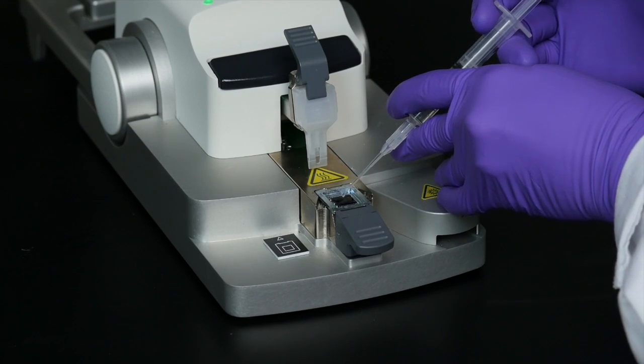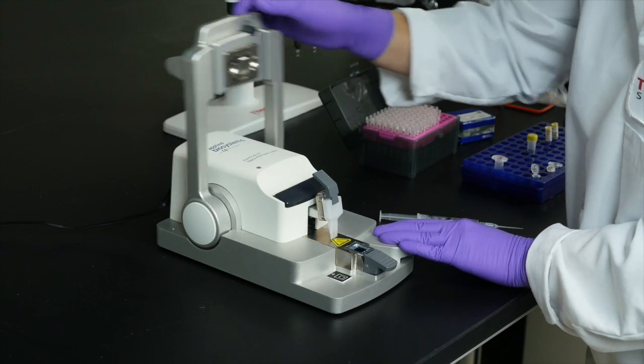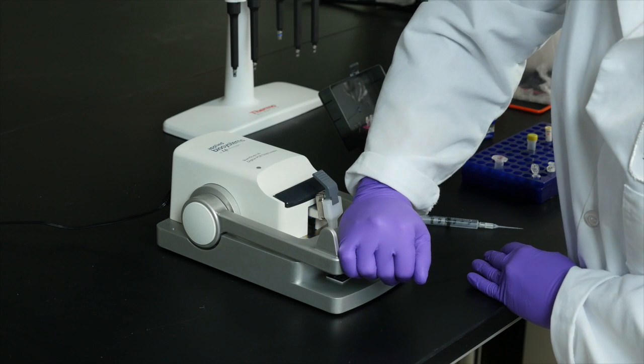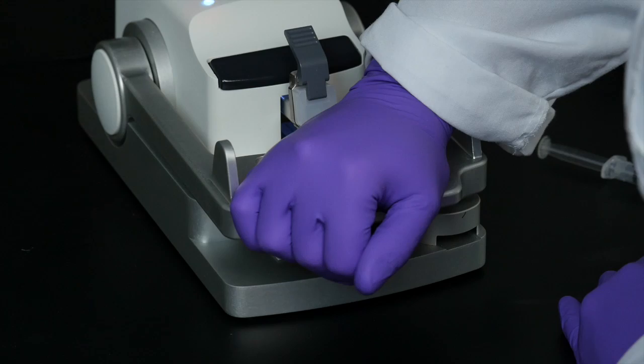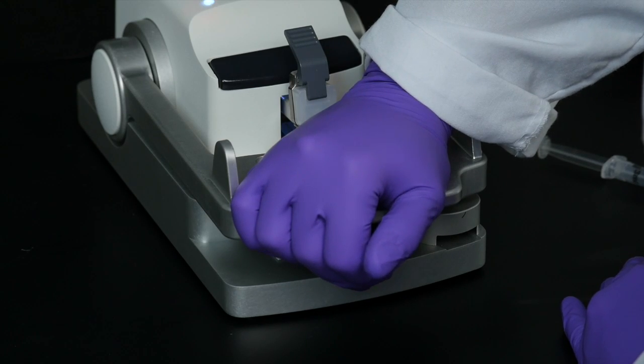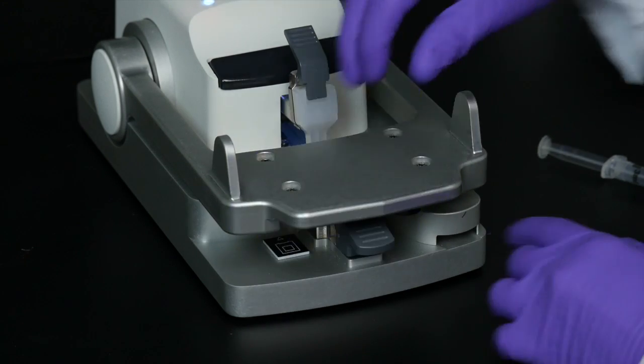The chip is ready to be sealed with the lid. Take the sealing arm and swing it across until the lid comes in contact with the chip base. To ensure a good seal, firm downward pressure for at least 15 seconds is recommended.